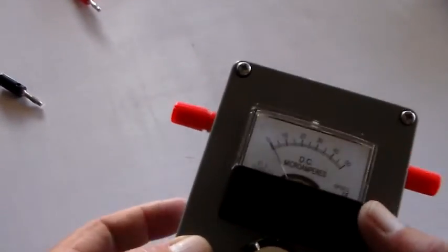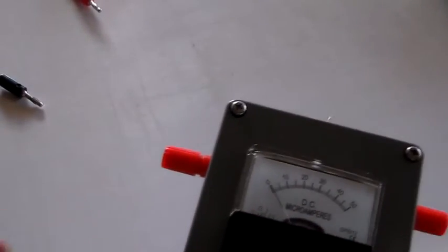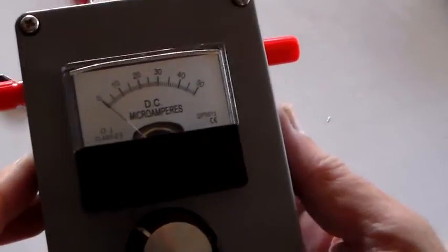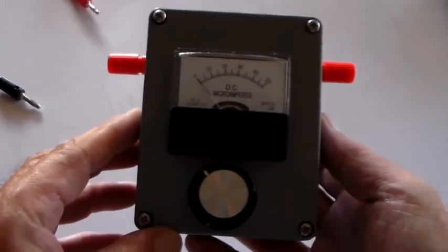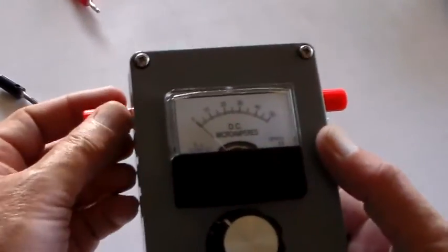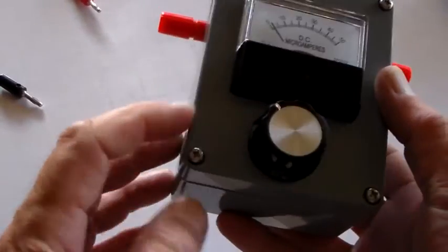So what's inside it? It's actually, what's the time, it's 5 to 6, so the light's not great, but it didn't take very long to make. Just a 50 microamp meter, a few bits and pieces, a couple of banana sockets, ABS box and a pot.